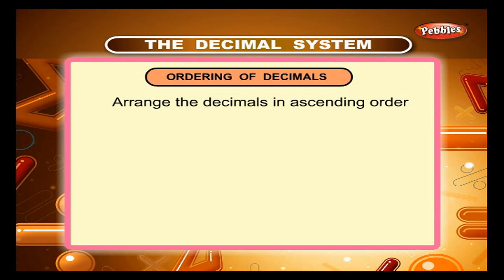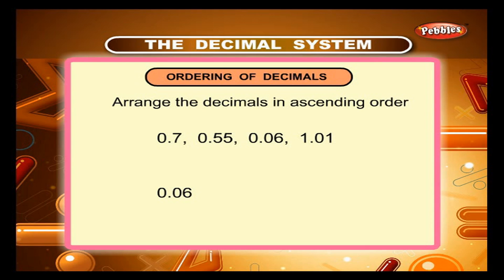Sum 4. Arrange the decimals in ascending order: 0.7, 0.55, 0.06, 1.01. Using the rules we have learnt, the order is 0.06, 0.55, 0.7, 1.01.